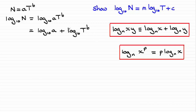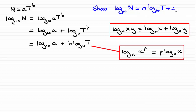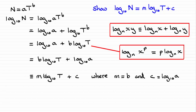Using that rule here, I can bring the b to the front of the log of t in base 10. If I do that, I get this line here. This is looking like what we have to show — I'm just going to swap these two terms around to be exactly correct. Comparing this to what we've got to show, it's identical to m·log t base 10 plus c, where m clearly relates to b, and c is the same as log of a in base 10.